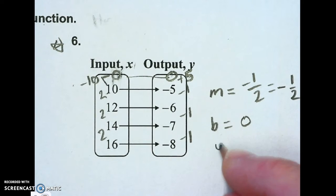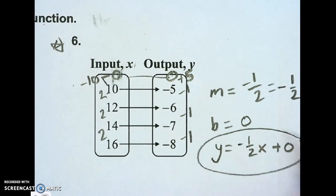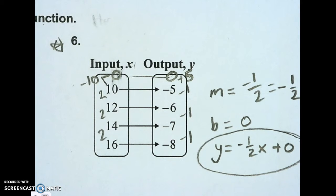My function is y equals negative 1 half x plus 0. You don't have to write the 0, either way it's right. Over and out, thank you.